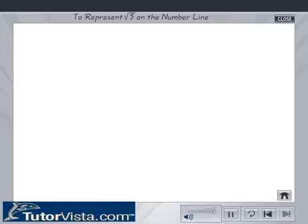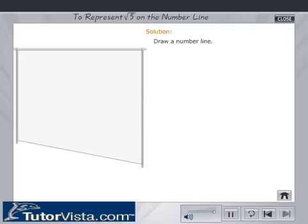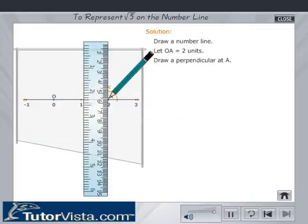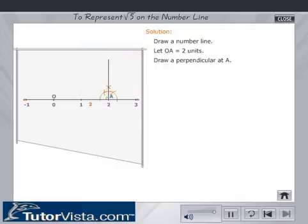To represent root 5 on the number line. Solution: Draw a number line. Let OA equal 2 units. Draw a perpendicular at A. Mark AB equal to 1 unit.